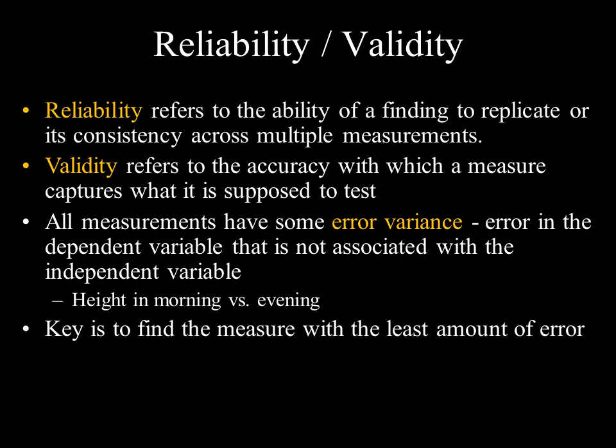In that sense, your results aren't valid — even though they might be reliable. If you use the same stick yesterday, today, and tomorrow, it gives you the same height, but it's not the correct height, so it's an invalid measurement even though it is reliable. There's always some error variance not associated with the independent variable. For instance, measuring people's height in the morning — you tend to be about an inch or half-inch taller than at night because over the course of the day your body begins to slouch.